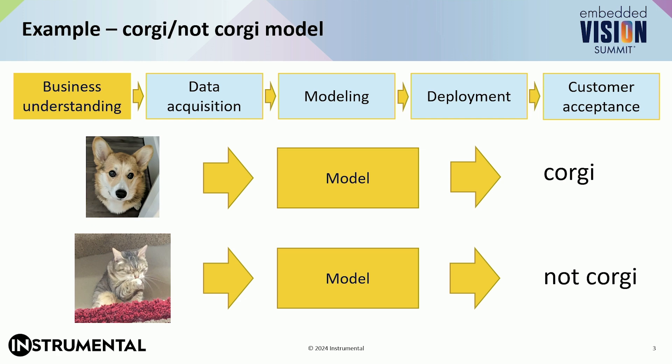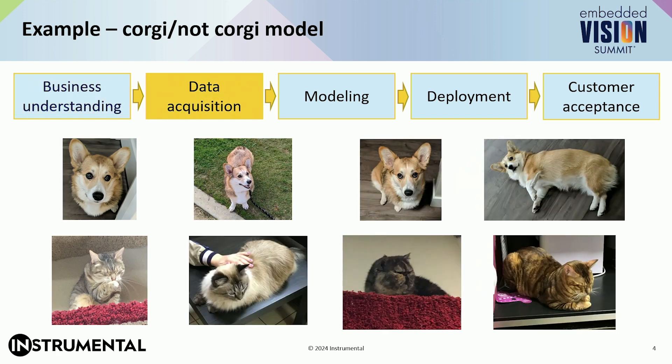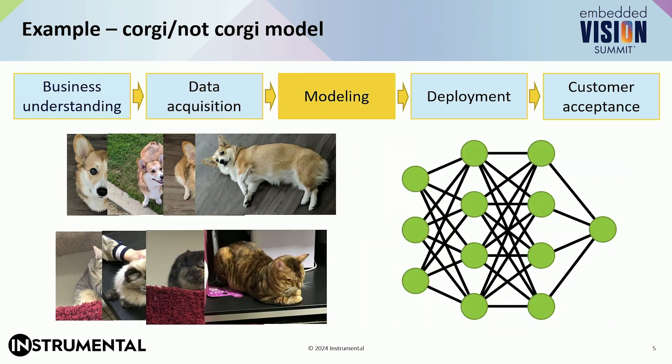I start with getting data from my phone, so I have a lot of photos of my Corgi and some other photos of not Corgi on my phone. Then I select some good model architecture, maybe even using NAS. And after that, I train the model on my data.